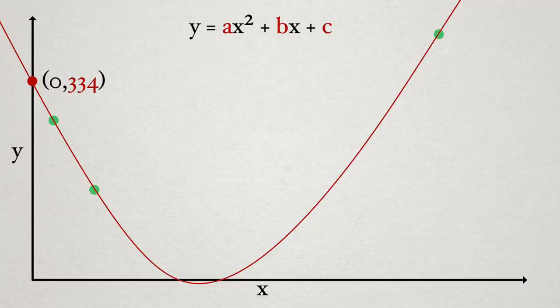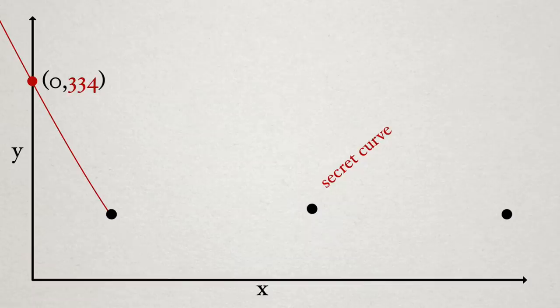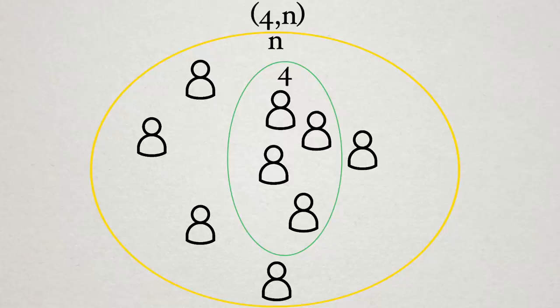This is known as a 3-out-of-n scheme, since we need at least 3 shares to recover the secret. If instead we want a minimum of 4 shares to define the secret, then we'll need to move up to a cubic curve, which will require 4 points to define, and recover the secret in the same way, using any 4 points. This is known as a 4-out-of-n scheme.